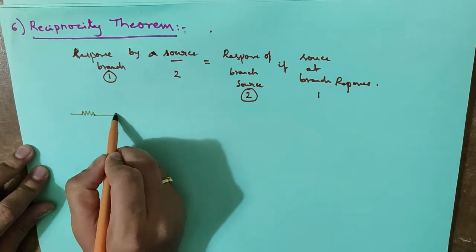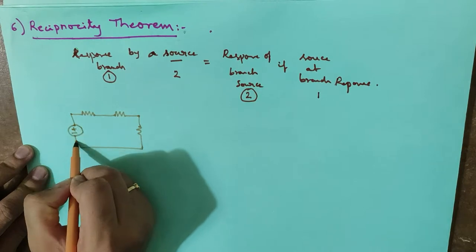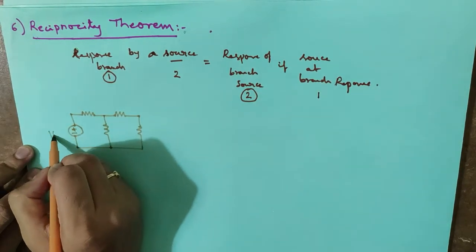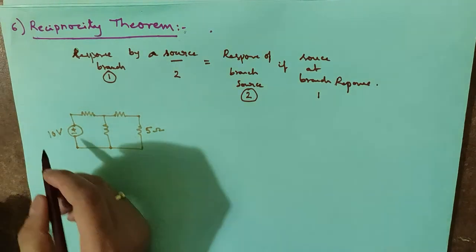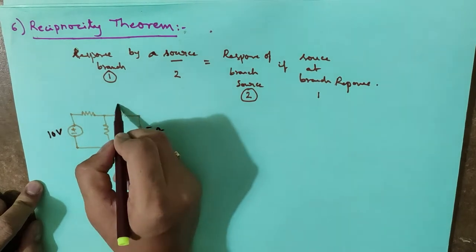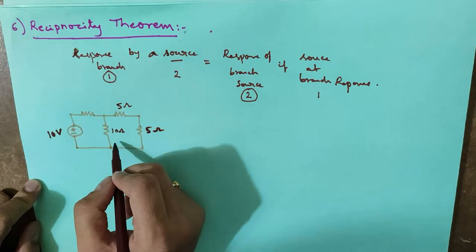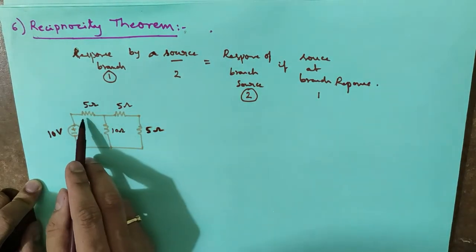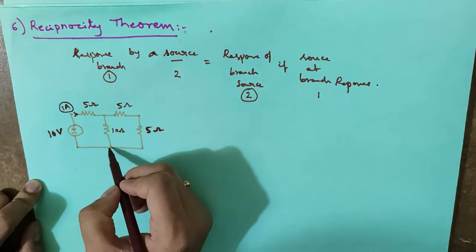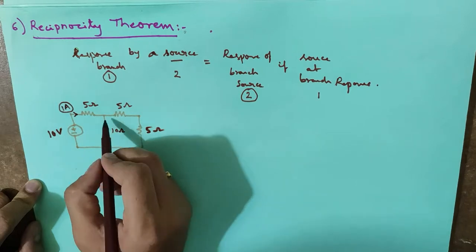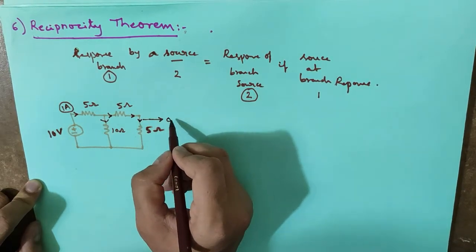So this is a circuit with resistances. Let me take the source as 10 volt. This is 5 ohm, this is also 5 ohm, so the total would be 10 ohm. And if this is 10 ohm, the total would be 10 and 10 in parallel, giving 5 ohm. Adding the remaining 5 ohm, the total resistance is 10 ohm. So 10 volt divided by 10 ohm gives 1 ampere. The voltage across the parallel combination is 10 volt, and the current divides equally, so the current at this branch will be 0.5 ampere.